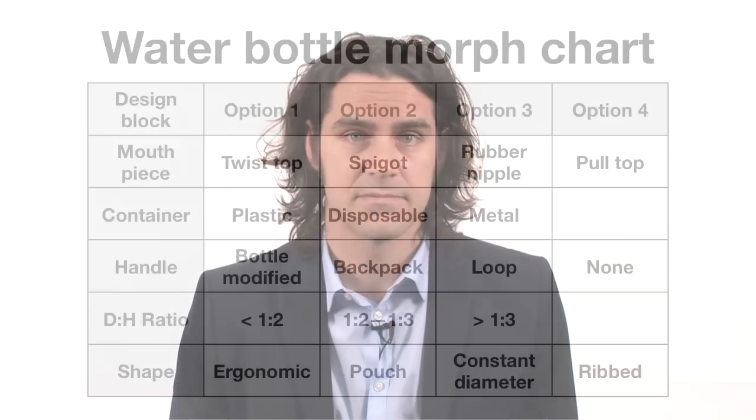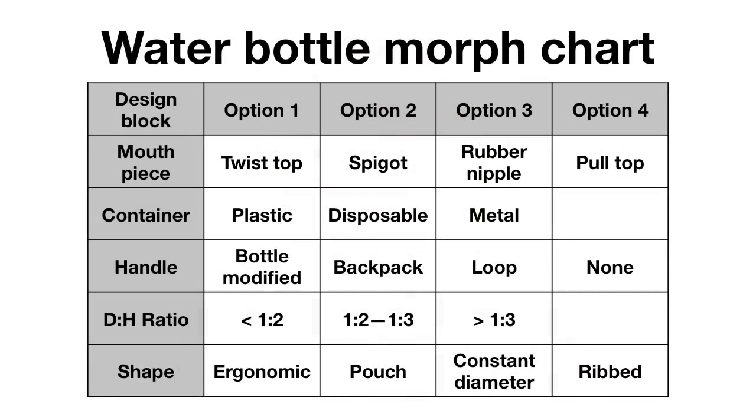Morph charts can be a helpful tool to generate a lot of solutions, but it can be daunting when you think about how many solutions you can actually come up with. To get a feel for the approximate upper limit of solutions for any morph chart, multiply the number of options for each row. For our water bottle morph chart, this generates 1,224 solutions, which is many too many. Although this calculation gives you a large number of possible solutions, there are a number of them that just don't work.